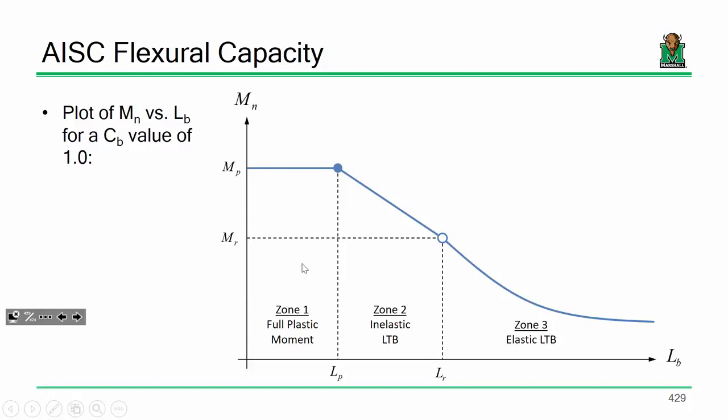A few things to note. So M sub R. M sub R is really just a fancy term for the reduced yield moment. And all the reduced yield moment is, is 70% of F_y times the section modulus. And the reason for the 70% is to account for residual stresses, those locked in stresses that you get in a section due to the manufacturing process.